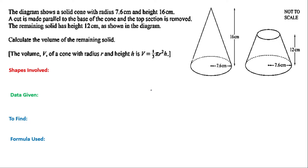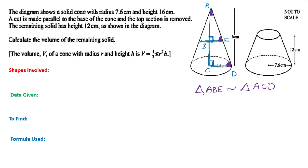Talking about similar shapes, you have a right angle triangle here, and considering the cone which is removed, you can form another right angle triangle. So you have two right angle triangles. Labeling them A, B, C and A, B, E — we have equal angles, so we can call them similar triangles. Triangle ABE is similar to triangle ACD. Using this condition, I can say AB over AC is equal to BE over CD.